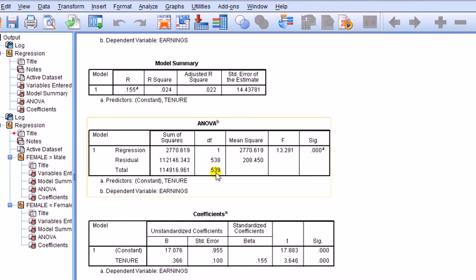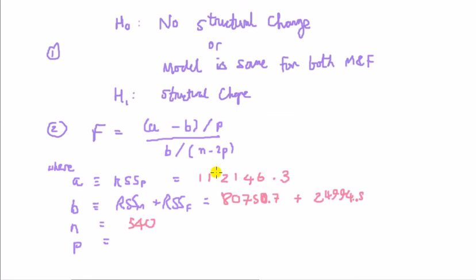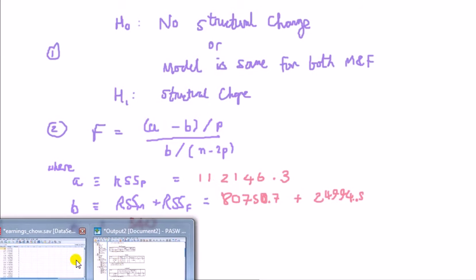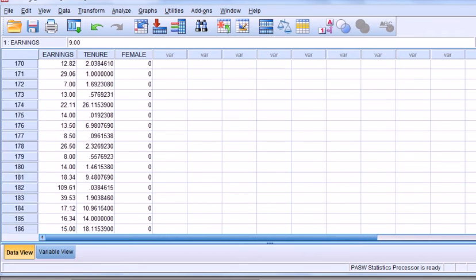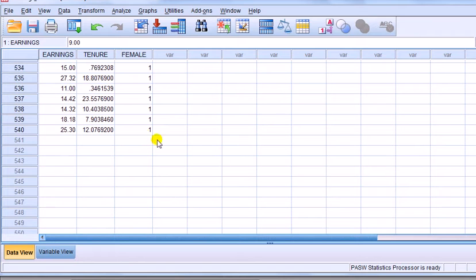If you're a bit shaky about being sure if it's 540 or not, just go back to the original data and scroll right down to the bottom - 540.